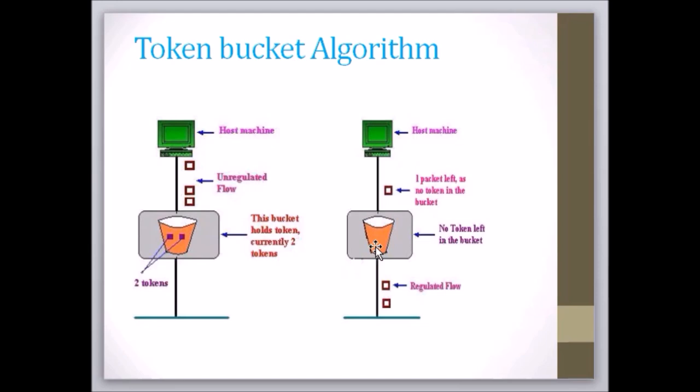The token bucket algorithm is less restrictive than the leaky bucket algorithm in the sense that it allows bursty traffic. However, the limit of the burst is restricted by the number of tokens available in the bucket at the particular instance in time.